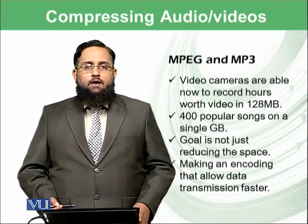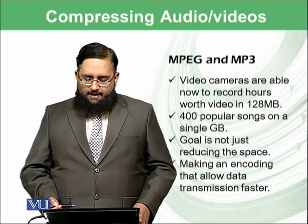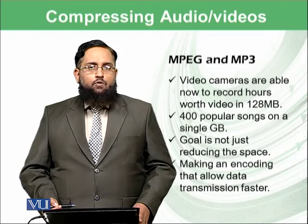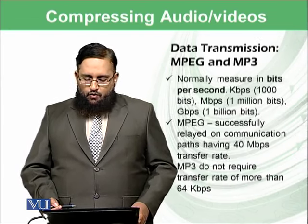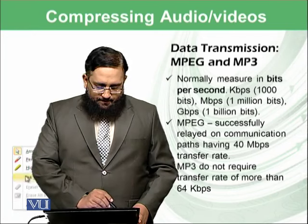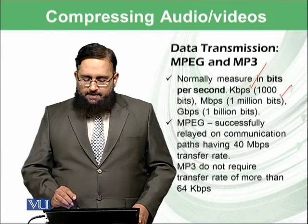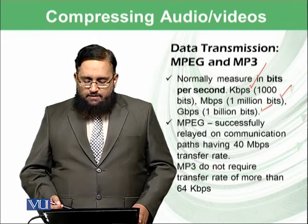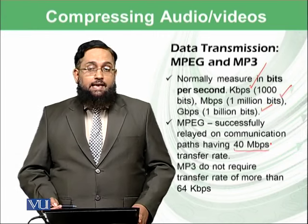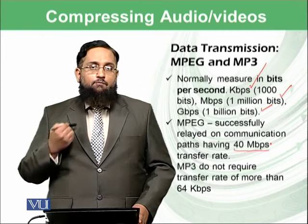The goal is not only to reduce size. Another objective of MPEG and MP3 is to enable faster data transmission over the network when communicating with other devices. Data transmission is measured in bits per second: kbps is 1,000 bits per second, Mbps is 1 million bits per second, and Gbps is 1 billion bits per second. MPEG can successfully relay over communication paths having a 40 Mbps transfer rate, but if lesser transfer rate is available, MPEG cannot be relayed or watched on the other device.